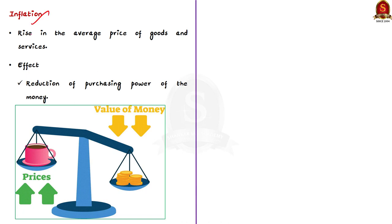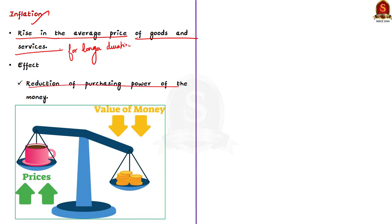Inflation refers to a rise in the average price of goods and services over a longer duration in the economy. Due to the increase in prices, the purchasing power of money gets reduced over time — meaning we need to spend more than before to enjoy the same set of goods and services.